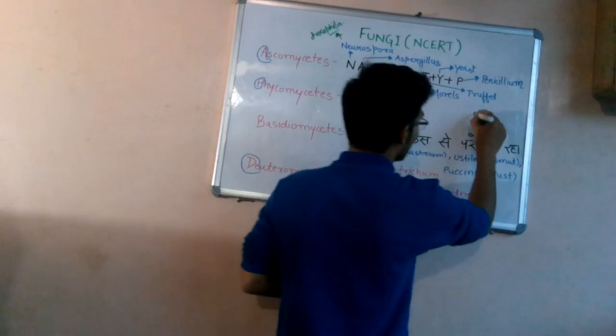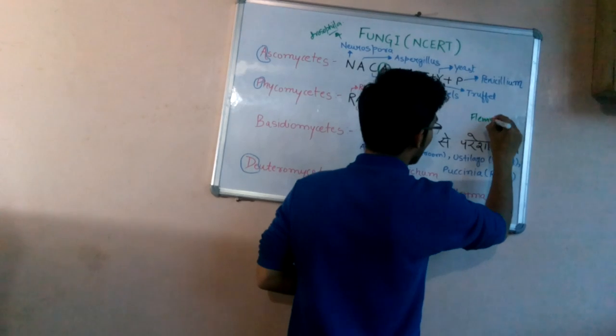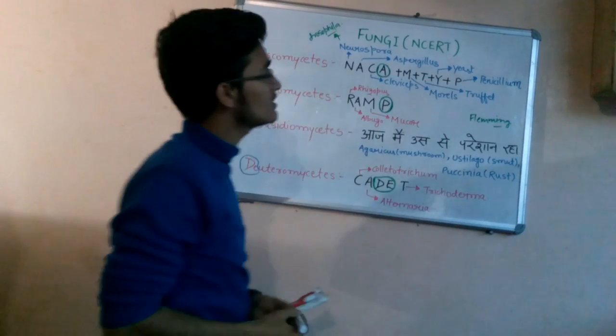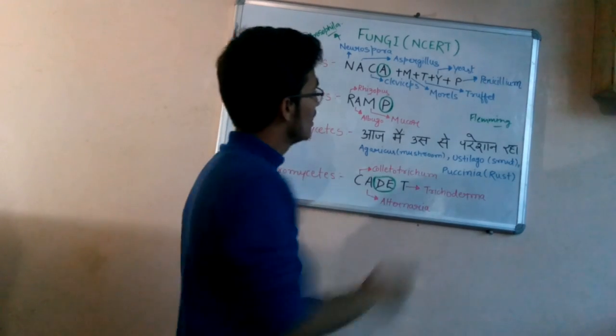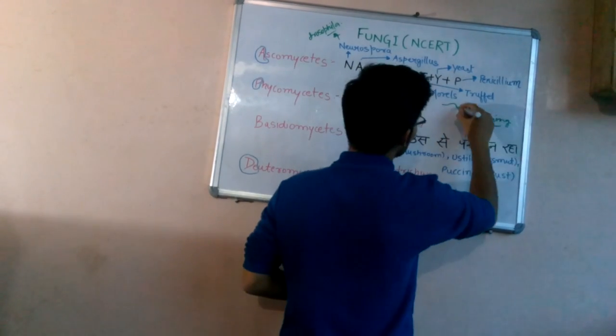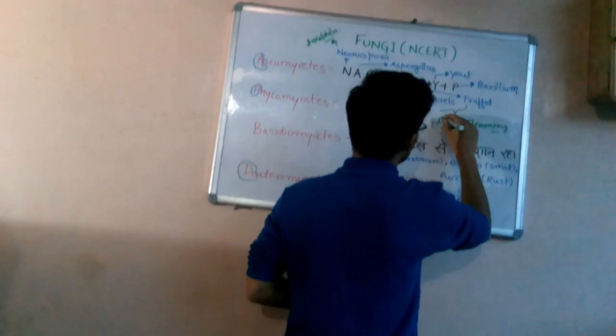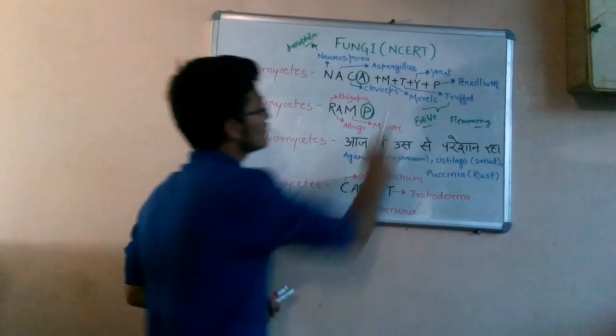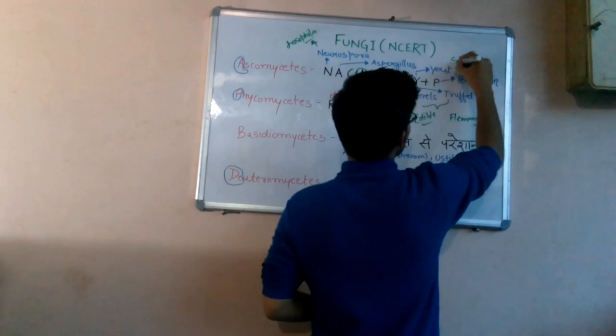For example, Penicillium - the first ever antibiotic extracted by Alexander Fleming is penicillin, which is derived from Penicillium. Morals and truffles are edible. This is a very important question: both of these fungi are edible.